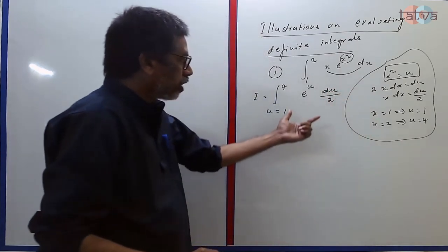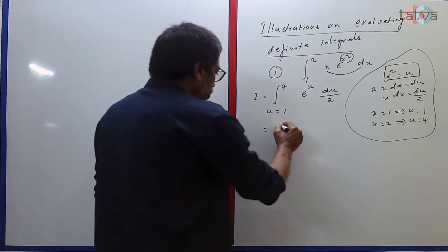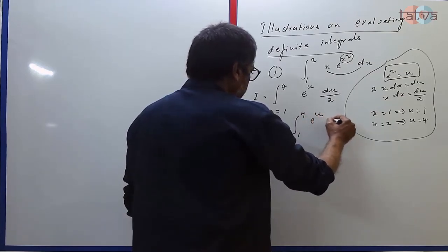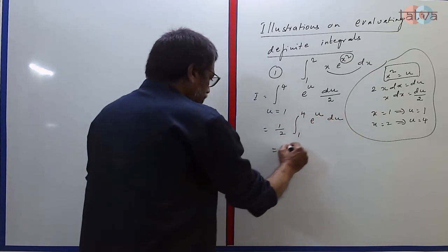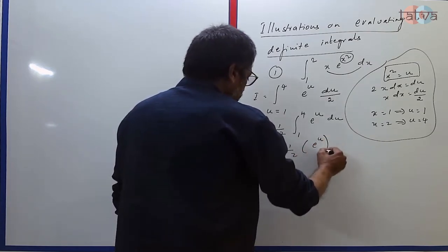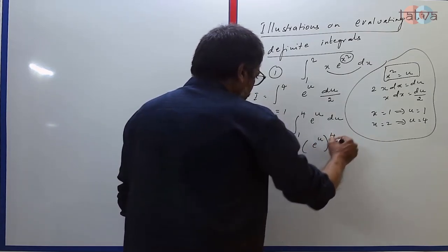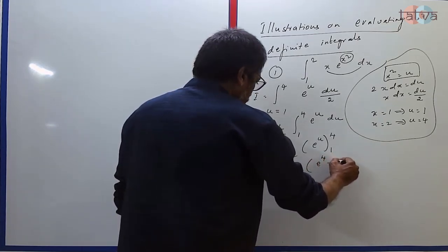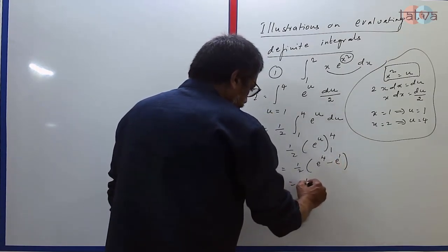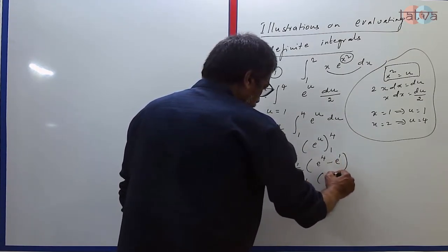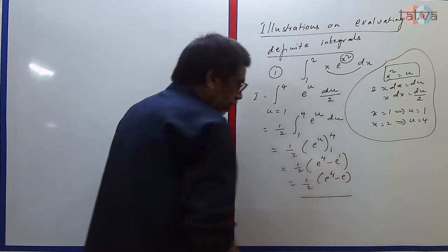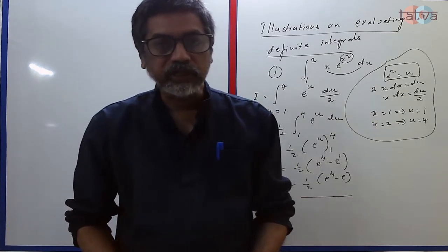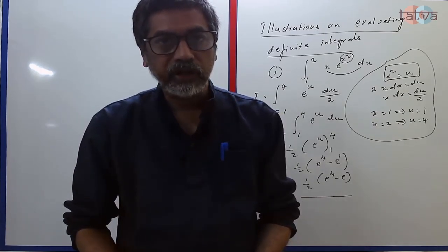So with these changes, let us see how this integral transforms. I will write I = integral u from 1 to 4, e^u times du/2. So we have full control over the situation now. Write 1/2 times integral 1 to 4 e^u du. This is 1/2 times e^u from 1 to 4. This is 1/2(e^4 - e).